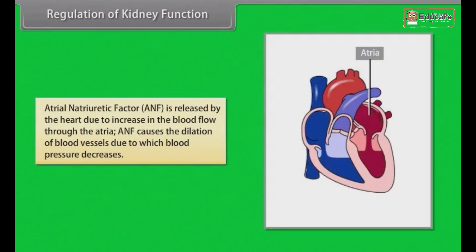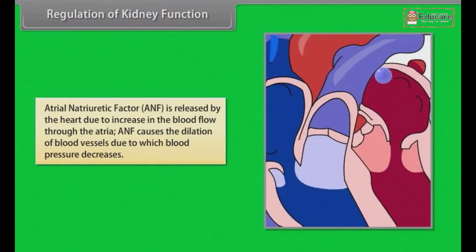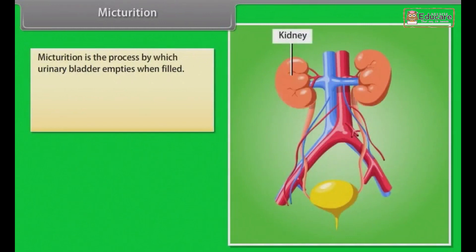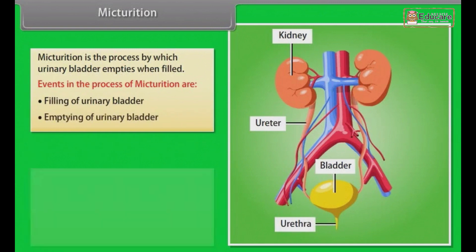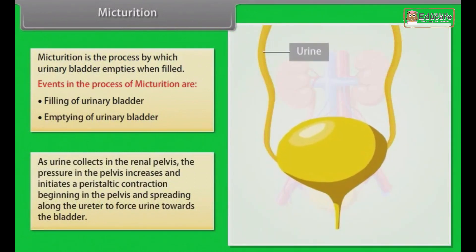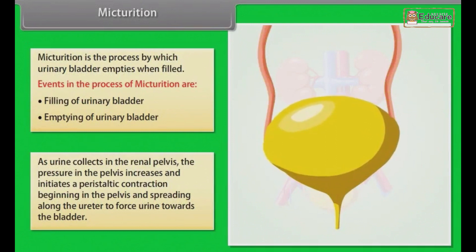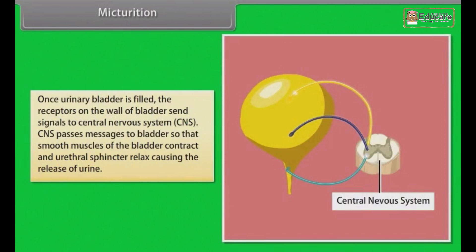Atrial natriuretic factor (ANF) is released by the heart due to increased blood flow through the atria; ANF causes dilation of blood vessels, decreasing blood pressure. Micturition is the process by which the urinary bladder empties when filled. As urine collects in the renal pelvis, pressure increases and initiates peristaltic contractions along the ureter, forcing urine toward the bladder. Once the bladder is filled, receptors on its wall send signals to the CNS, which causes smooth muscles of the bladder to contract and the urethral sphincter to relax, releasing urine.